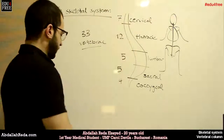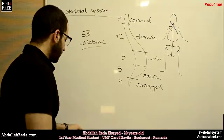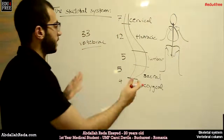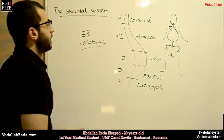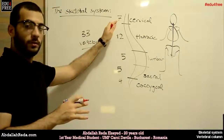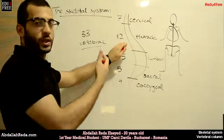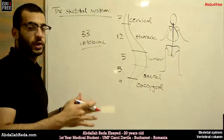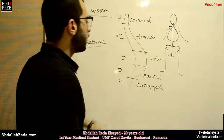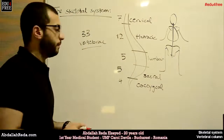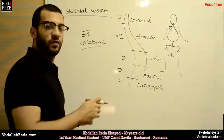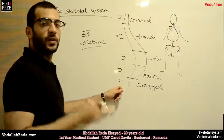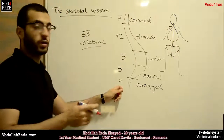From the shape of the vertebral column, we notice that the vertebrae in each region are different in thickness and shape. The cervical ones are small, the thoracic ones are medium sized, and the lumbar ones are the largest. The sacral vertebrae are large but fused together, so you cannot remove just one. The coccygeal vertebrae are very small and also fused with each other.